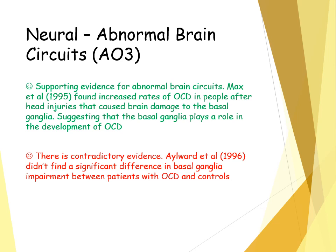There is supporting evidence for abnormal brain circuits: increased rates of OCD were found in people who had head injuries causing damage to the basal ganglia, suggesting the basal ganglia does play a role. However, there is contradictory evidence that there isn't a significant difference between the basal ganglia of people with OCD and controls. Also, as a biological explanation, it is biologically reductionist — reducing the complex phenomenon of OCD down to a single neurotransmitter such as serotonin, a single gene like the CERT gene, or a specific brain area like the basal ganglia.